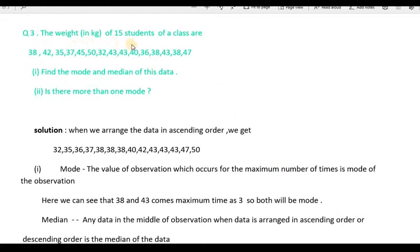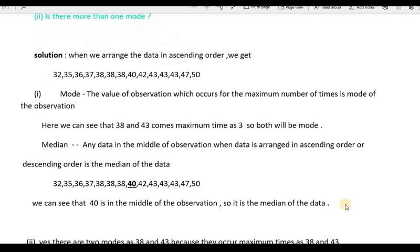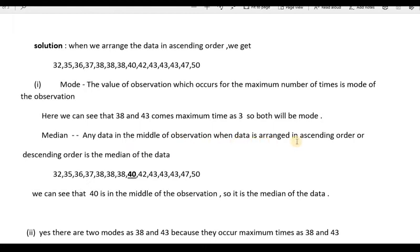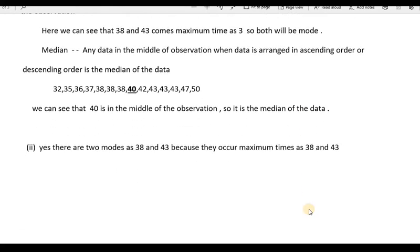Question number 3. The weights of 15 students of the class are given. We have to find the mode and median, and check if there is more than one mode. For mode, we see that 38 and 43 both appear the maximum number of times — 3 times each — so both will be the mode. For median, arranging the data in ascending order, 40 is in the middle, so 40 is the median. Yes, there are two modes: 38 and 43, as both occur 3 times.